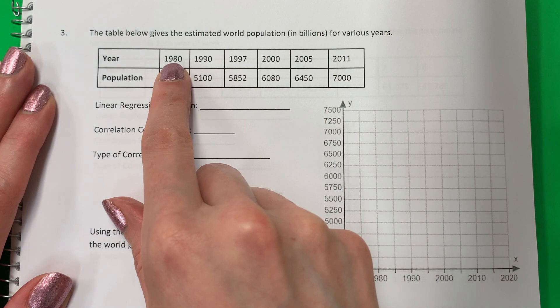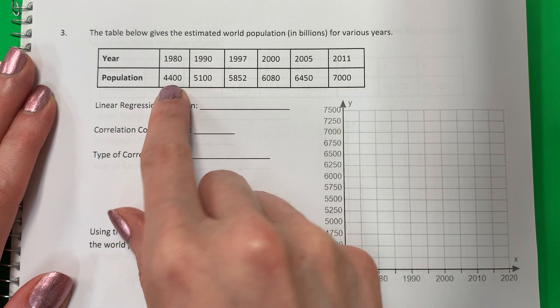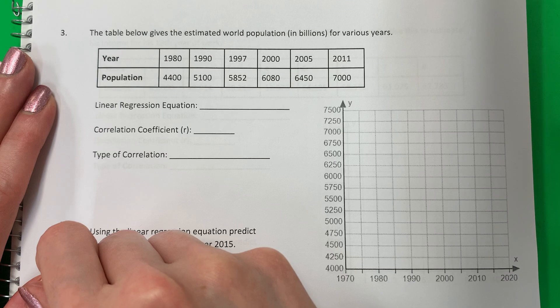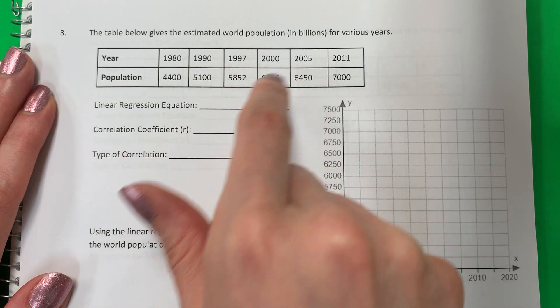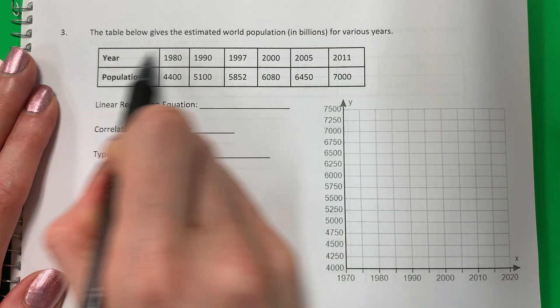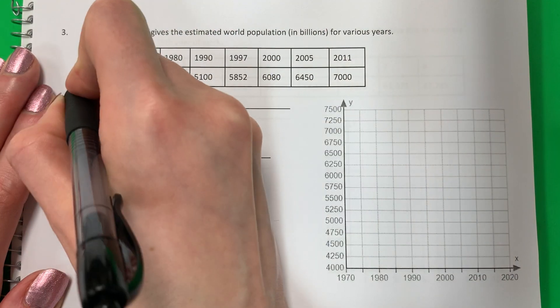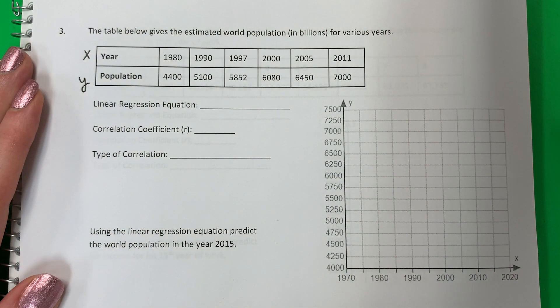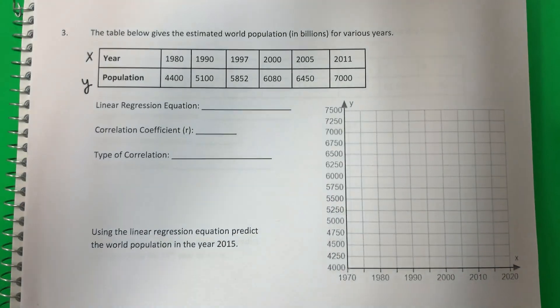And so you can see in 1980, I had 4,400 billion people, etc. So remember, the first line is going to be X and the second line will be Y. Let's put this in the calculator. Vamos a poner adentro de la calculadora.